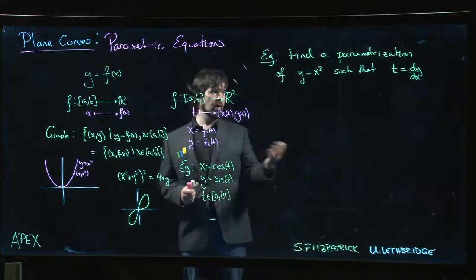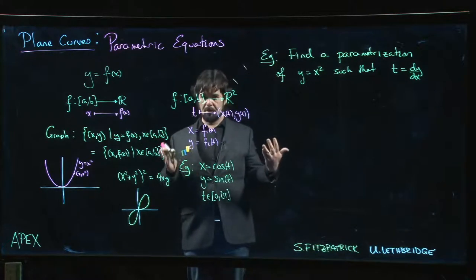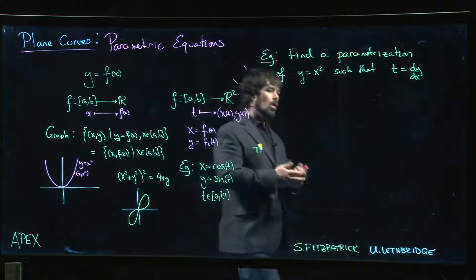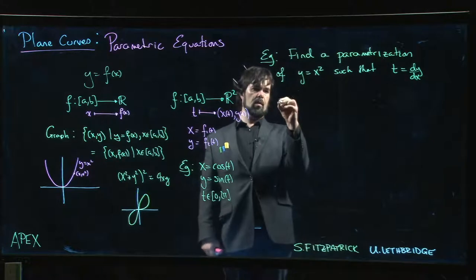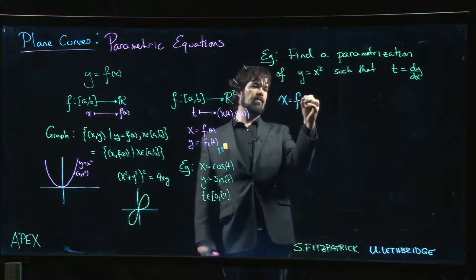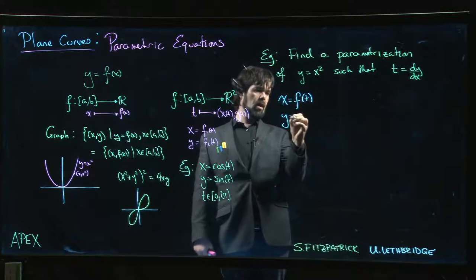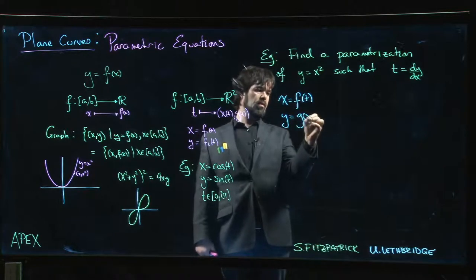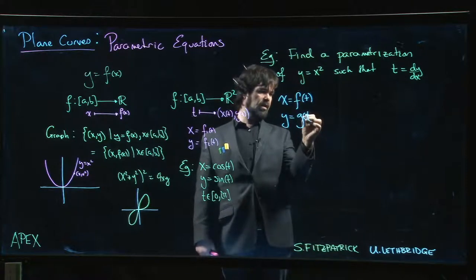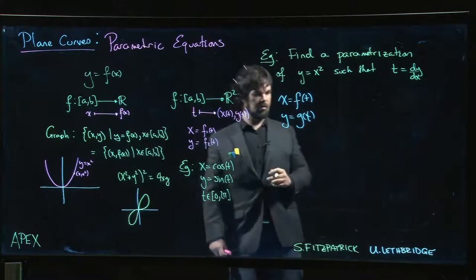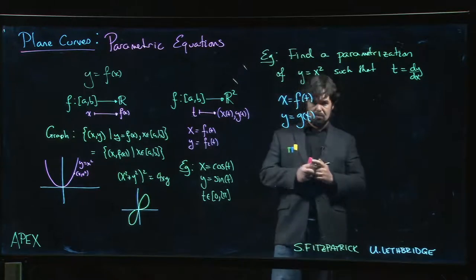It's not uncommon to ask for parameterizations where the parameter represents a certain value of one of the things that we think about. The goal here is to write x as some function of t, and we want to write y as some other function of t, say g(t). One of the reasons we like to use t as a parameter is we like to think of t as time.